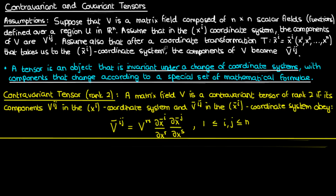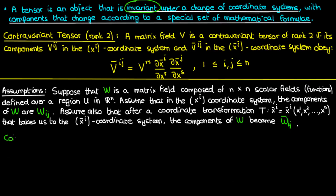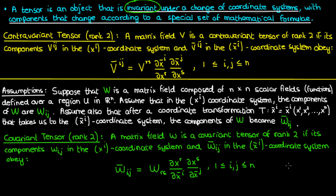What about covariant tensors? The exact same assumptions apply. The only differences are that the indices are now in the subscript instead of the superscript and we're using W as the matrix field instead of V. Right now W is a matrix field, not a tensor. In order for W to be a tensor, the whole of W must be invariant under a change of coordinates, and its components must obey the corresponding law of transformation, with the partial derivatives being flipped relative to the contravariant case. Again R and S are dummy indices summed from 1 to n, and i and j are free indices.